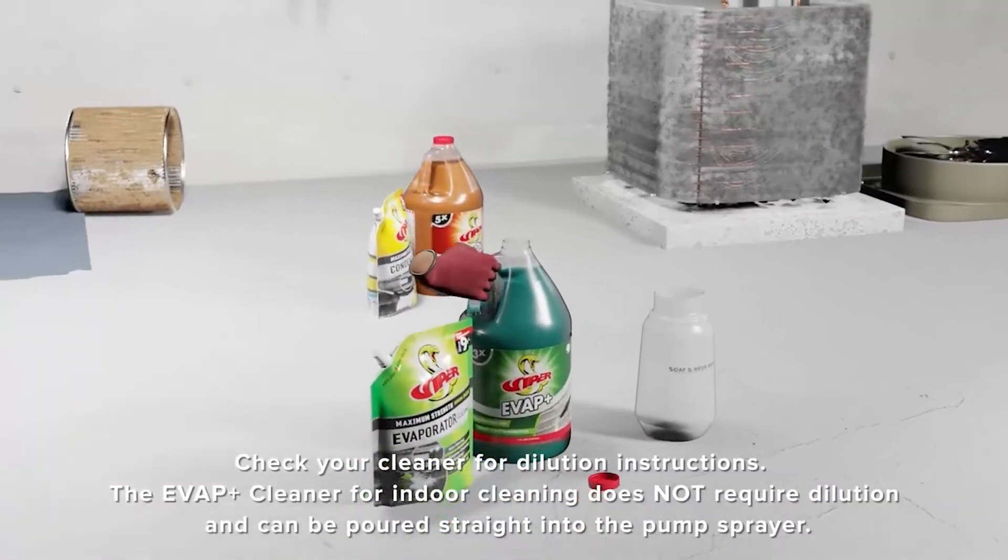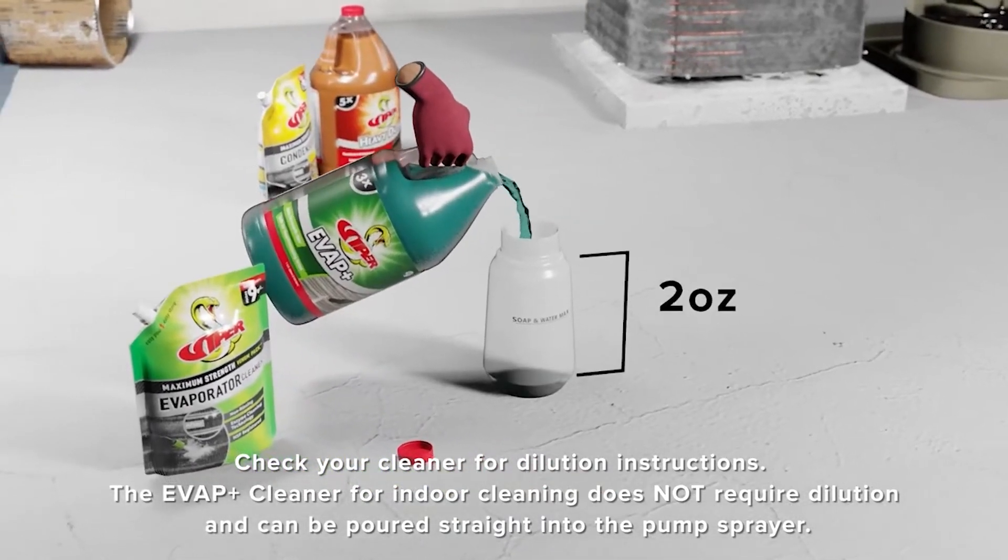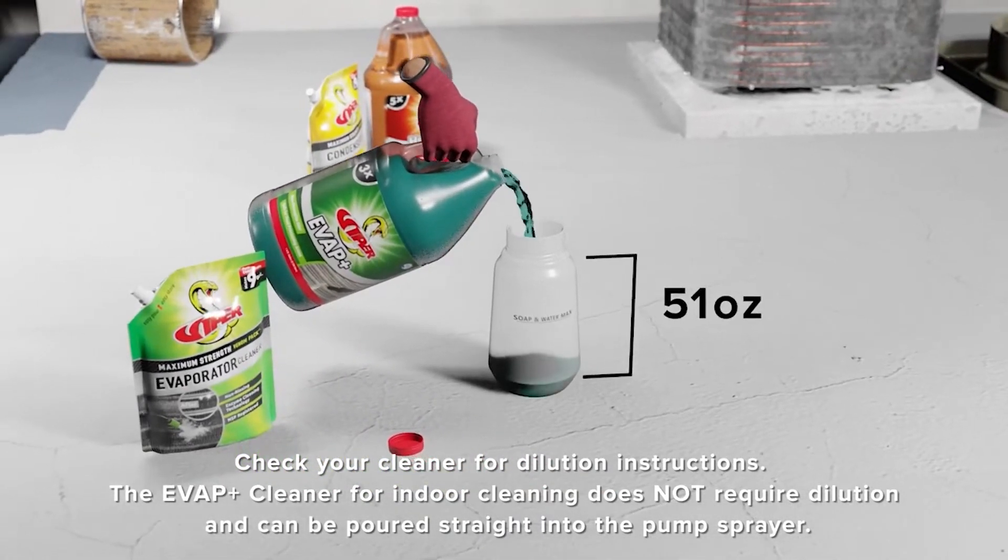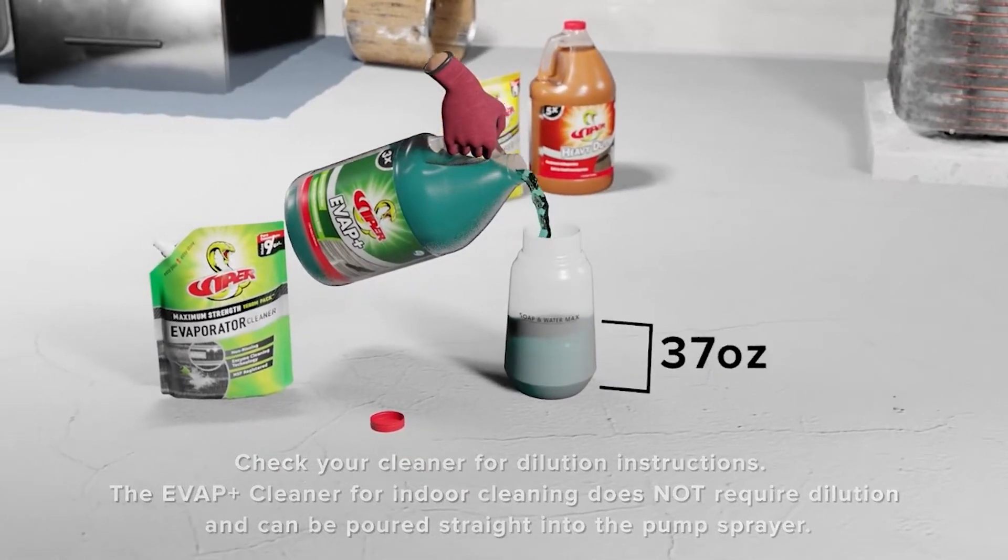The Evap Plus cleaner in the gallon jug does not require dilution and can be poured straight into a pump sprayer. Whereas, the more concentrated evaporator cleaner in the Venom Pack does require appropriate dilution.